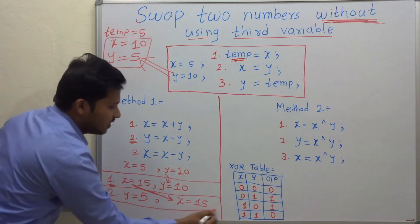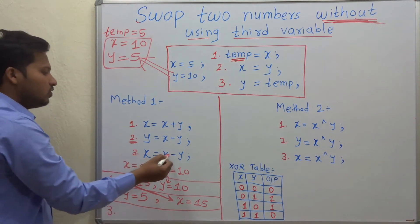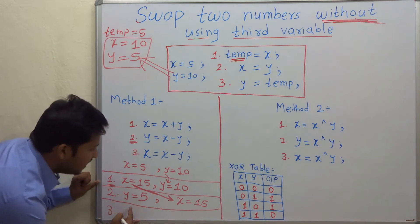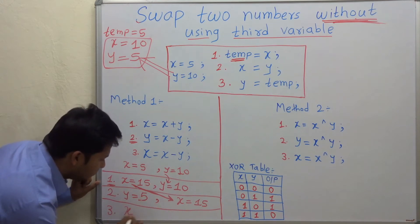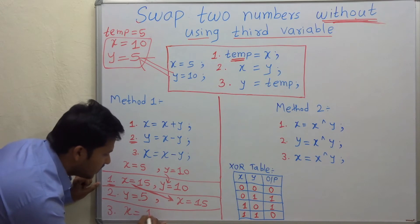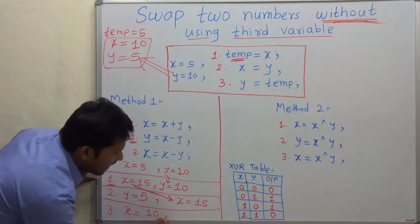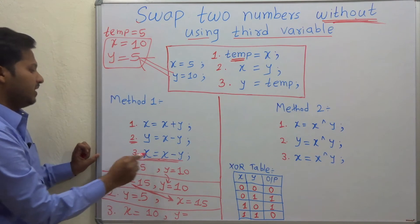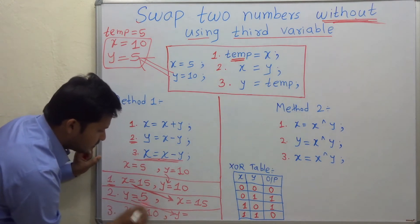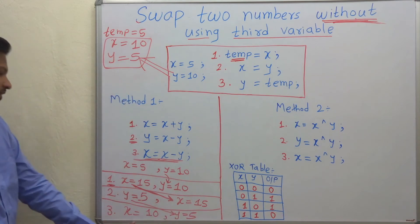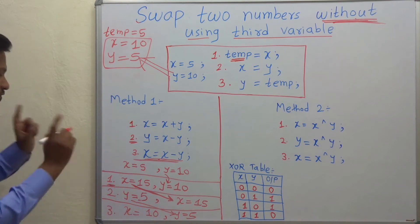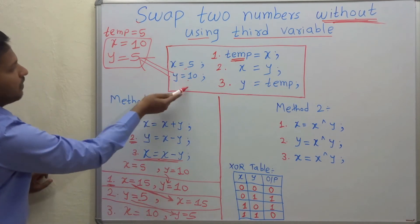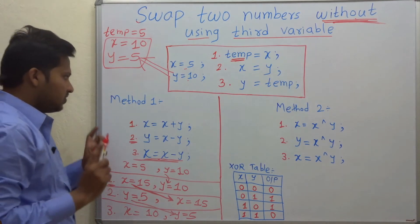Now let's go to the third statement: x is equal to x minus y. x is 15 and y is 5, so x will be 15 minus 5, which is 10. The value of y is not affected in the third statement, so y remains 5. The result: x is 10 and y is 5, so the values of x and y are successfully swapped. This is the first method.